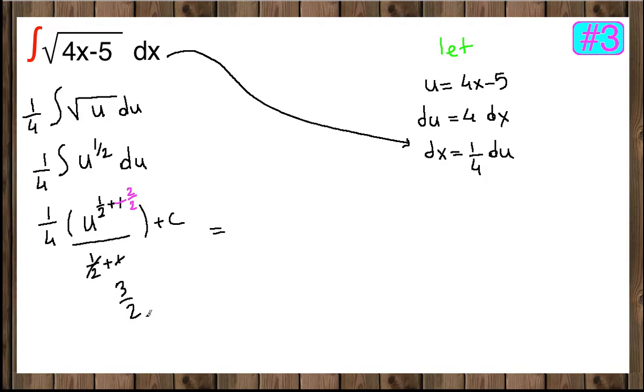Dividing by 3 over 2 means multiplying by 2 over 3. So 1 fourth times 2 over 3 u to the 3 over 2 plus c. And if we rewrite this, divided by 2 is 1, divided by 2 is 2. This is going to be 1 sixth u to the 3 over 2 plus c.